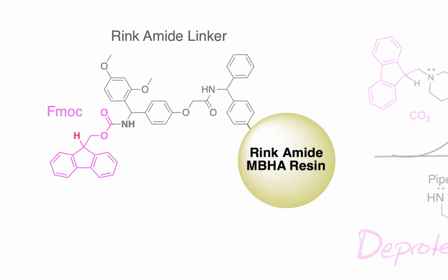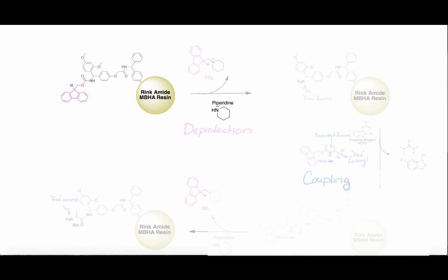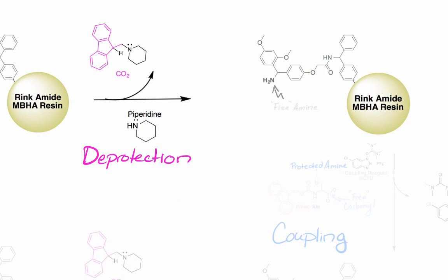Before we can add the first amino acid, the Fmoc group must be removed. Fmoc is stable in acidic conditions, but is easily removed by a weak base due to the acidic hydrogen, shown in bold in this Fmoc structure. The products of this Fmoc deprotection step are shown. We use papyridine as the base for this deprotection reaction. The result is an unprotected or free amine, which can now undergo a coupling reaction with the carbonyl of an amino acid. All side products from the deprotection reaction can simply be rinsed away from the solid support before proceeding to the next step.